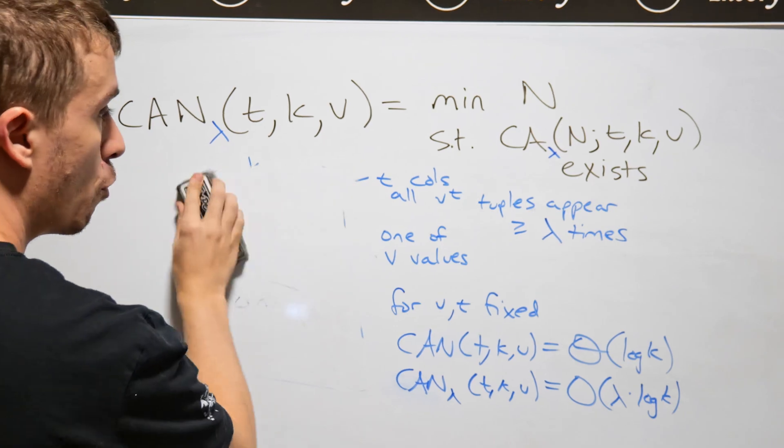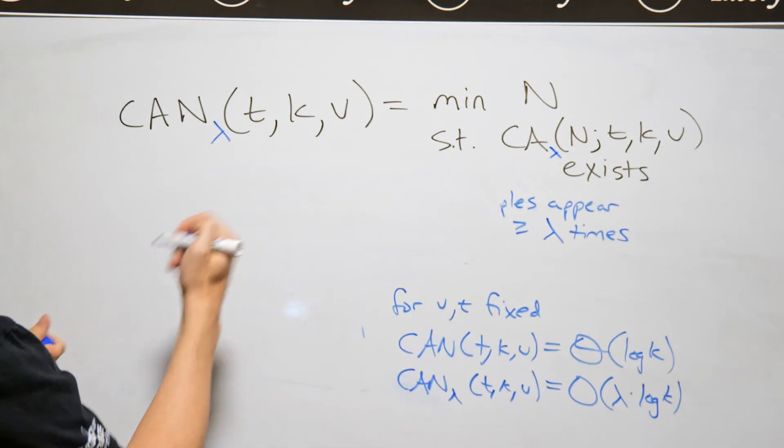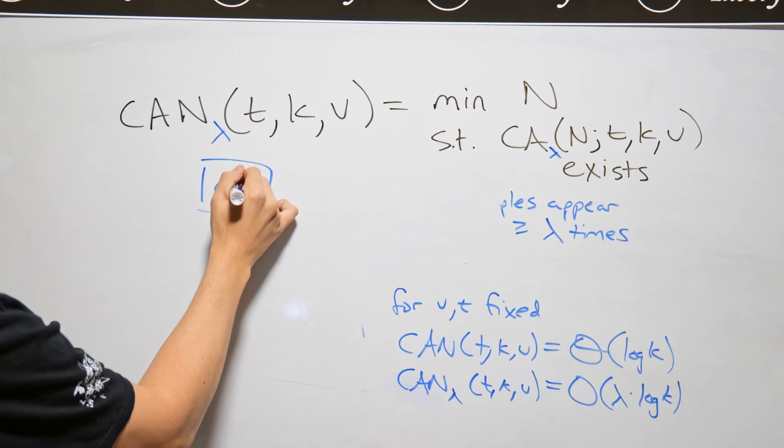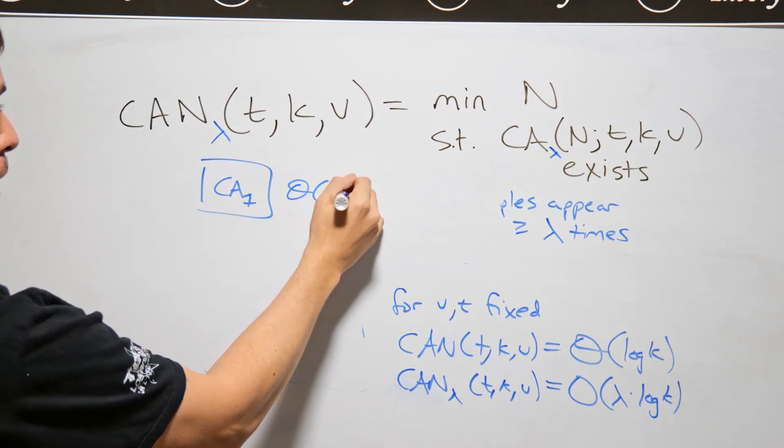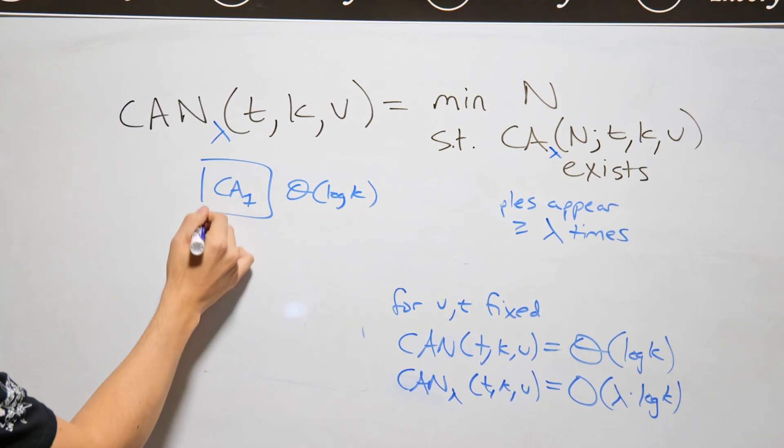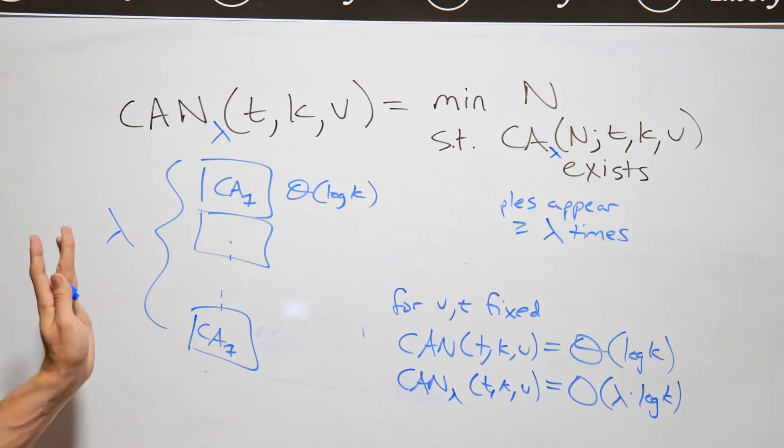And we can just do a really simple thing, which is to literally just duplicate a covering array with index one. So this is theta log k rows. And I can just do it a whole bunch of times. So then if I just literally duplicate the array lambda times,